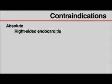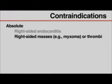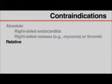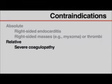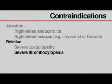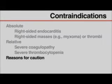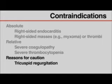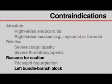Absolute contraindications include right-sided endocarditis or right-sided intracardiac masses or thrombi. Relative contraindications include severe coagulopathy or thrombocytopenia, which may complicate sheath placement and should be corrected before the procedure. Exercise caution and consider fluoroscopy in patients with tricuspid regurgitation, which makes catheter passage more difficult, and in patients with left bundle branch block, in whom catheter passage may induce complete heart block.